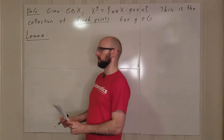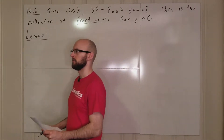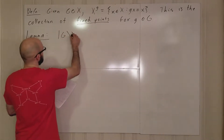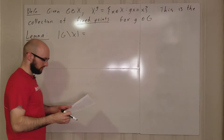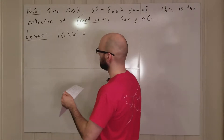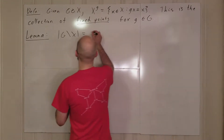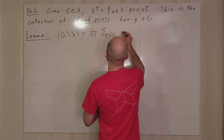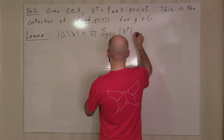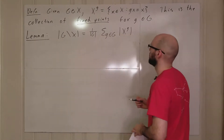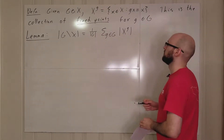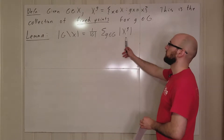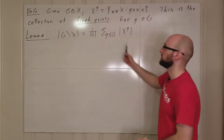I heard that from a professor, so it's probably true. Anyway, the number of orbits we get from this action is equal to one over the order of G times the sum of the sizes of X^g. This is sort of like saying the number of orbits equals the average number of fixed points for the average g.